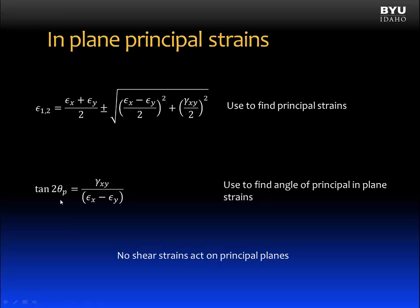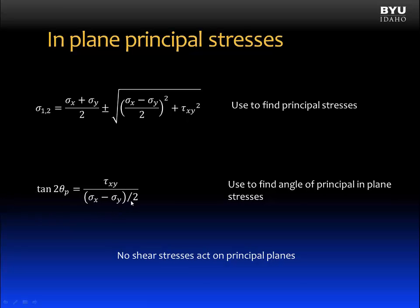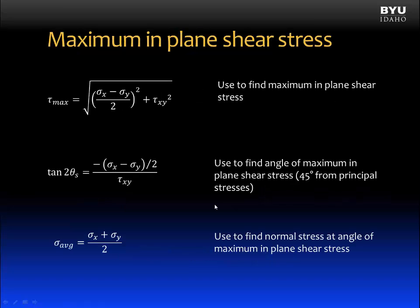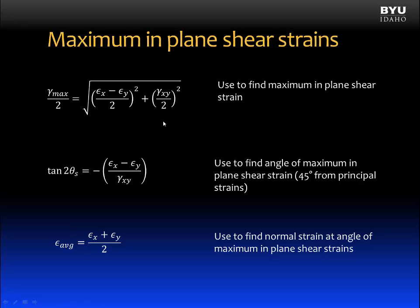For the equation for the angle of rotation for our principal strains, it is also a similar equation. Notice that the division by two in the denominator is not present in the principal strain equation. As we had maximum in-plane shear stress for plane stress, we will have maximum in-plane shear strains, replacing sigma x and sigma y with epsilon x and epsilon y, and tau xy with gamma xy divided by two. Notice that this equation for maximum in-plane shear strain results in the maximum strain divided by two.